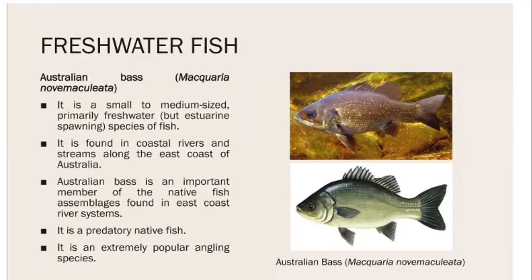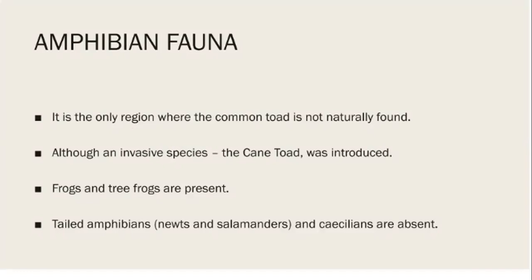The Australian Bass is a small to medium-sized fish primarily present in freshwater, also found in coastal areas and streams. It is an important predatory native fish and is the most popular angling fish in the region, commonly caught with a hook.